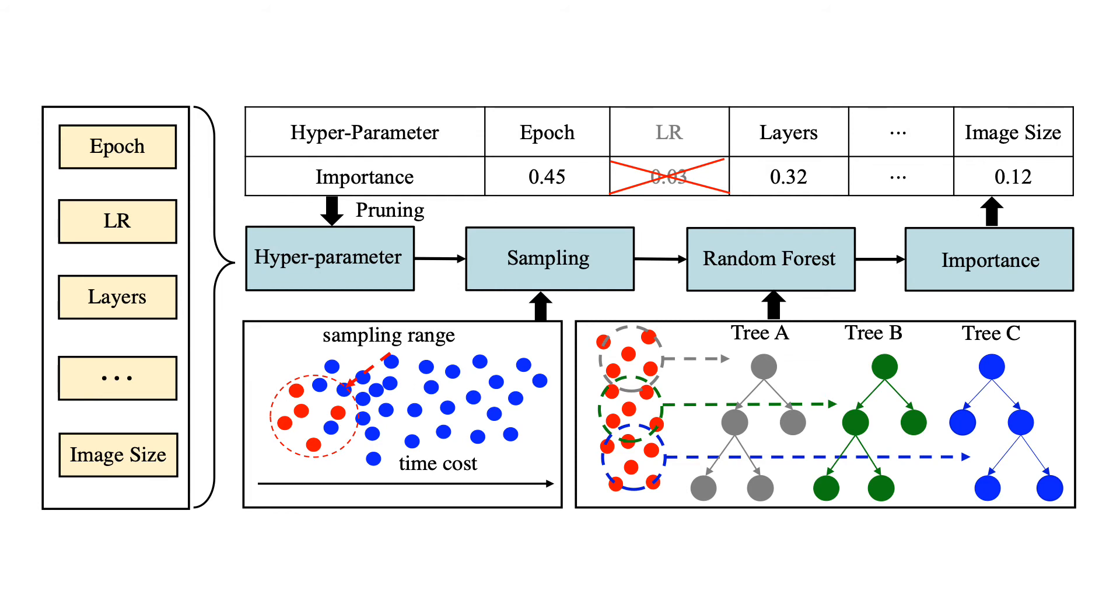We first sample the example with the lowest time cost. Then the sampled example is used to train the random forest, which is used to evaluate the importance of the corresponding hyperparameters.